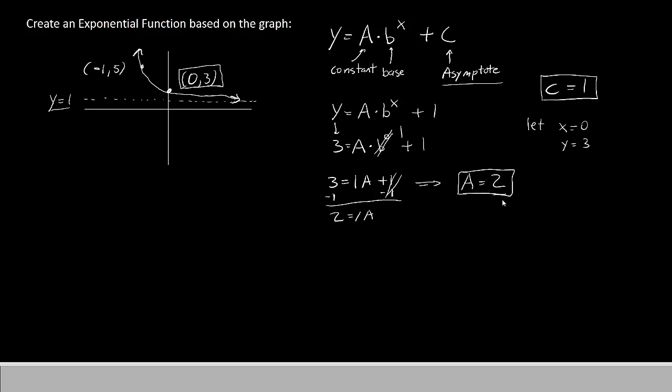Now let's rewrite the equation with a and c. We'll have y equals a which is 2 times b to the x plus c which is 1. Now we have another point that we have not used yet. Let's use it now and we will let x be the x coordinate negative 1 and let y equal 5. Now we'll see what happens and see if we can solve for b.